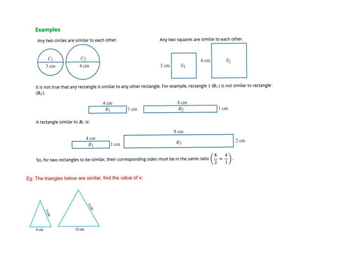Many shapes can be similar. Two circles are similar because their angles are the same — they both have 360 degrees. If finding the scale factor going from the smaller circle to the larger, it would be four over three. For two squares, since all angles are equal and sides proportional, the scale factor going from one to the other would also be four over three.